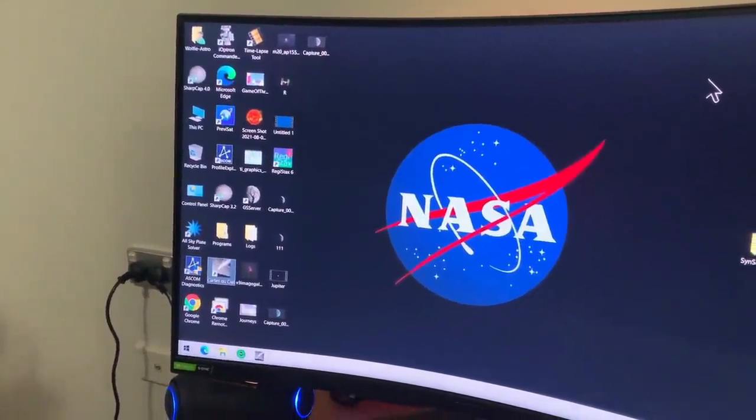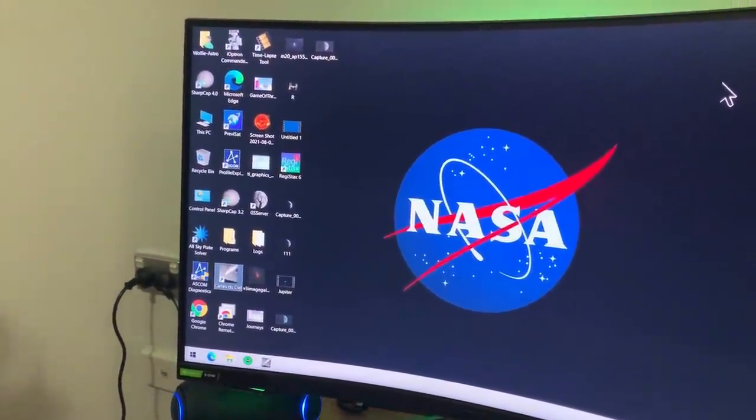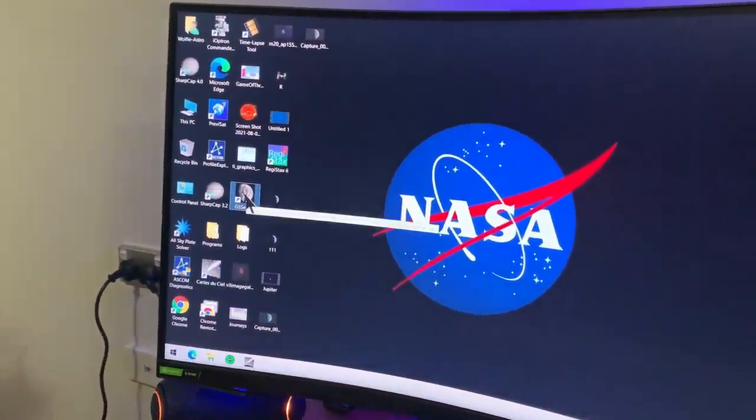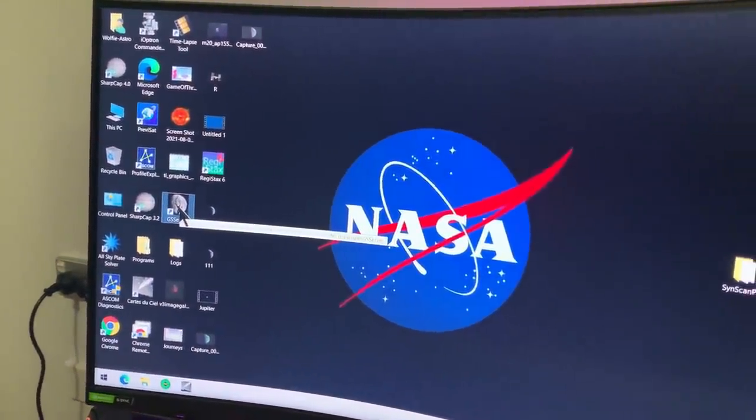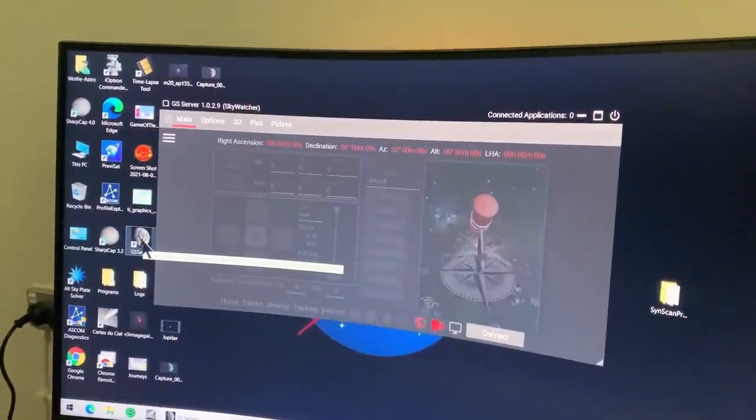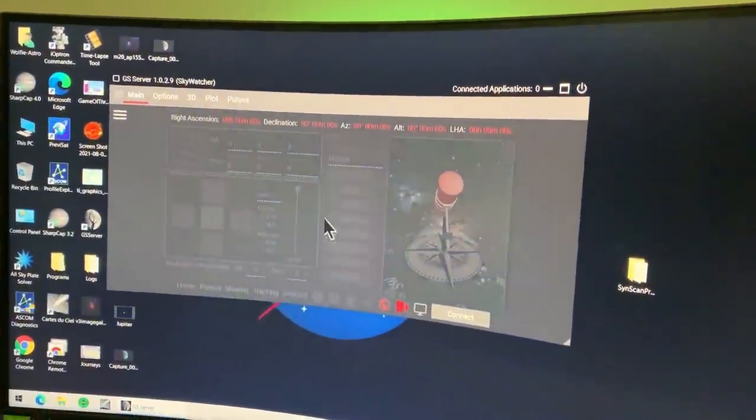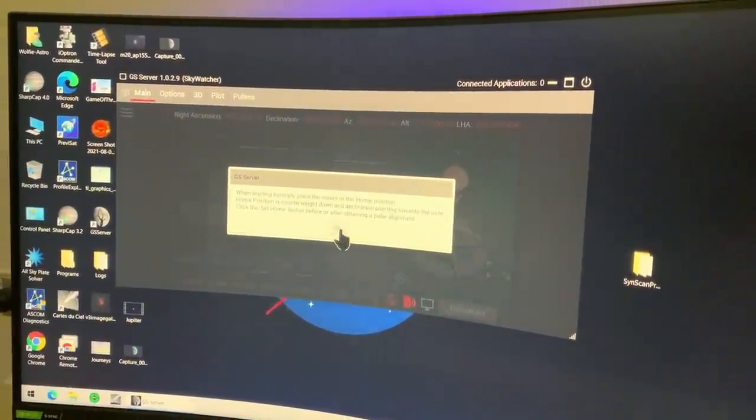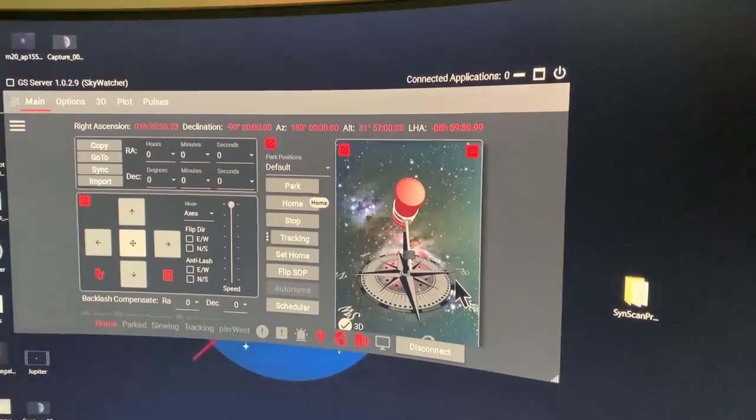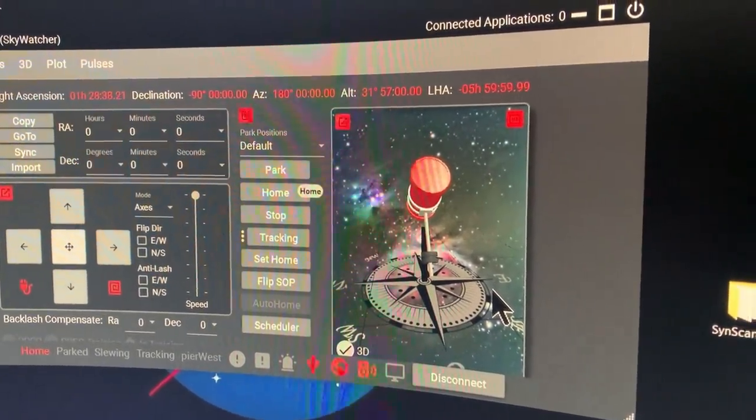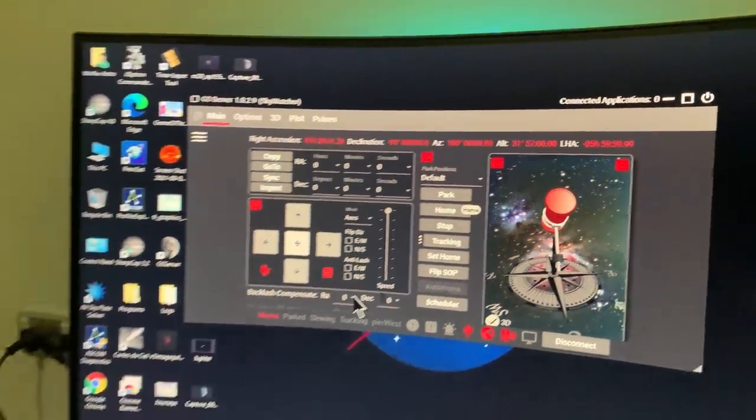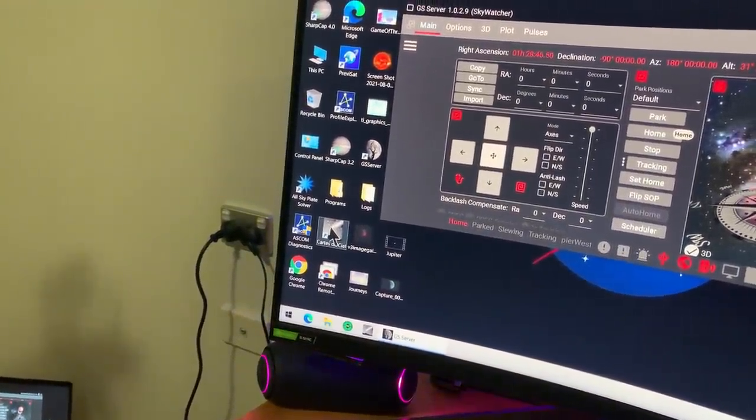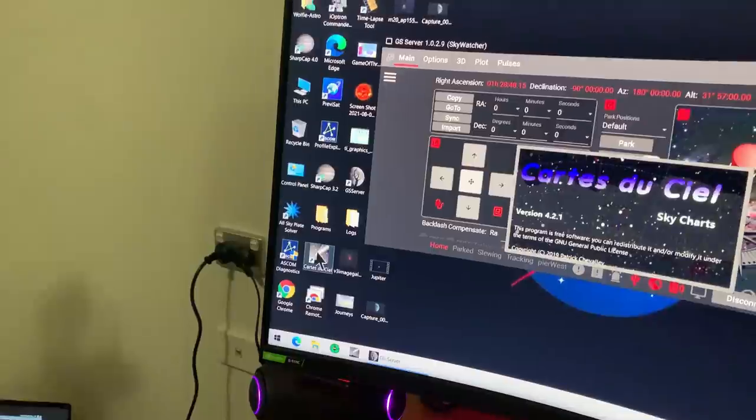So at this point, we launch the software that controls the mount and also a planetarium program. The software I use is called Green Swamp Server. Skywatcher has its own, but I prefer this one because it has a nicer interface. So the mount is now connected and as you can see, it has a graphical indication of what the mount is doing.